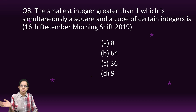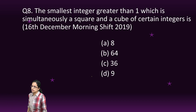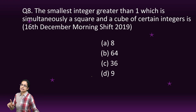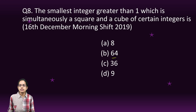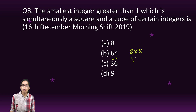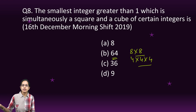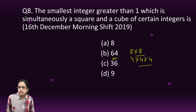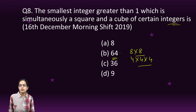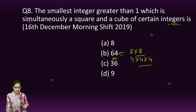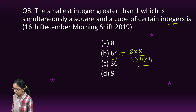The next question: find the smallest integer greater than 1 that is simultaneously a perfect square and a perfect cube. From the choices, 64 is the right answer. 64 = 8² (a perfect square) and 64 = 4³ (a perfect cube). It must be an integer, and 64 satisfies both conditions — a very direct question.